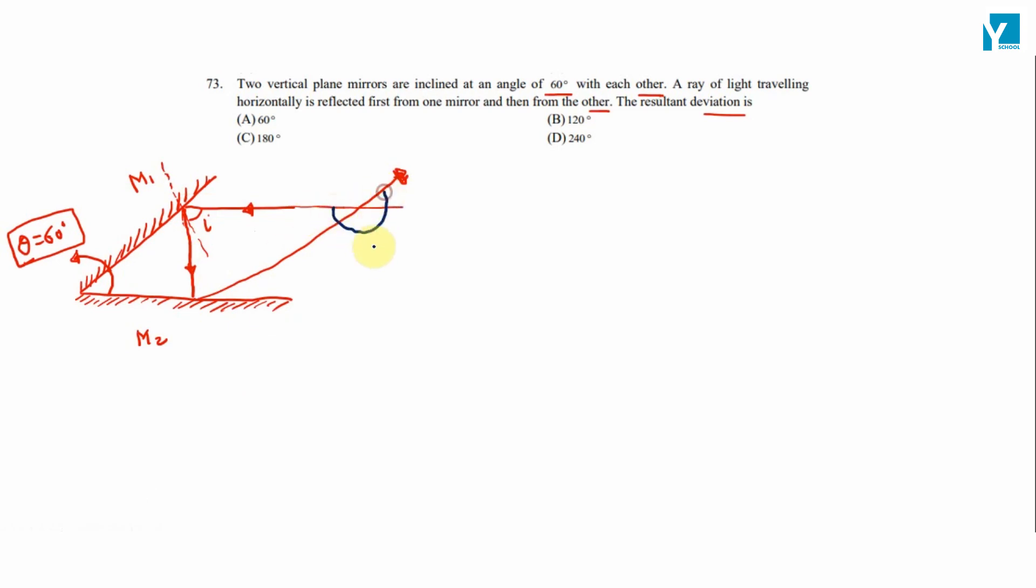So this is our net deviation, the angle delta. On the theory part we have already done, if two mirrors are arranged at angle theta in between them...